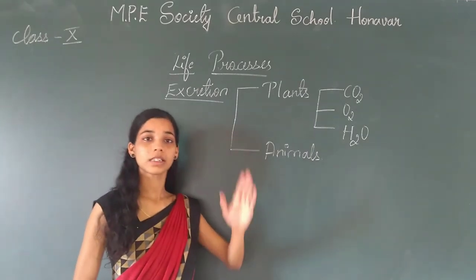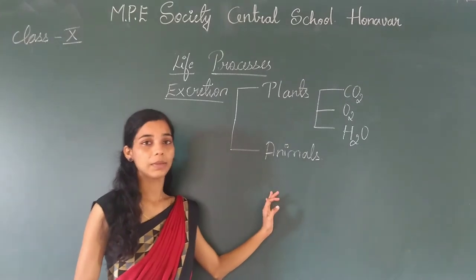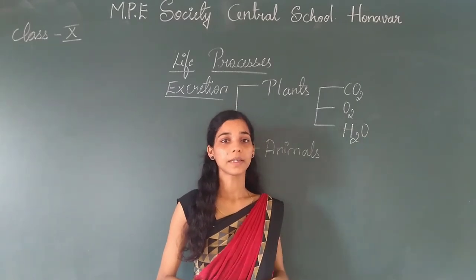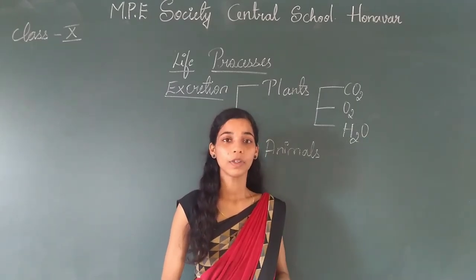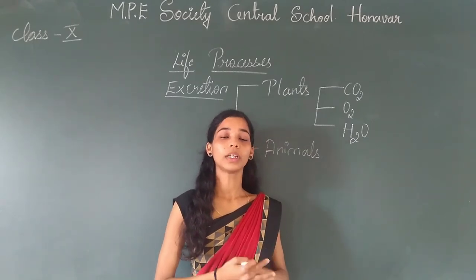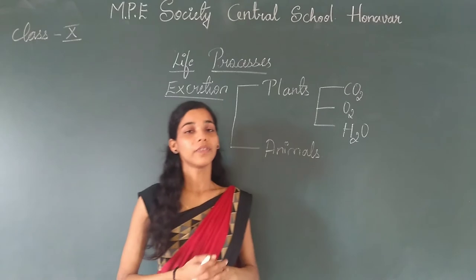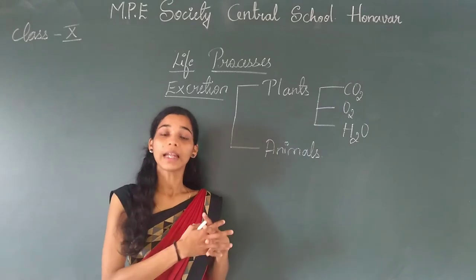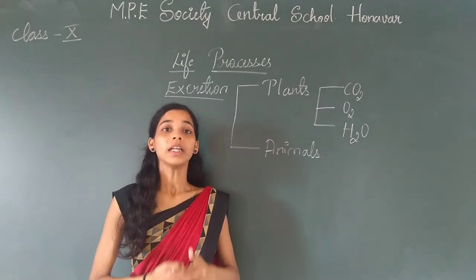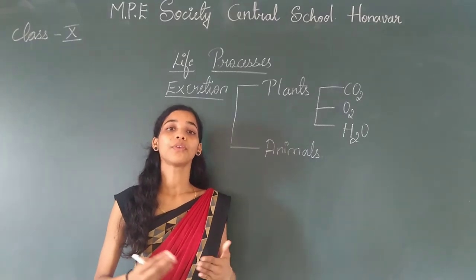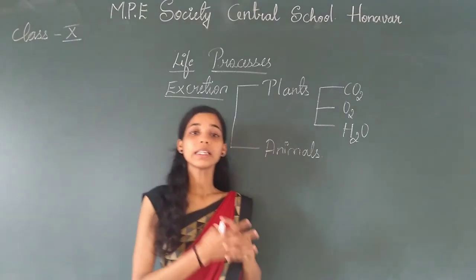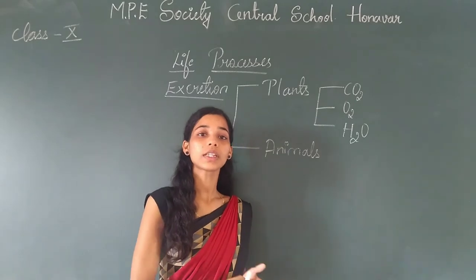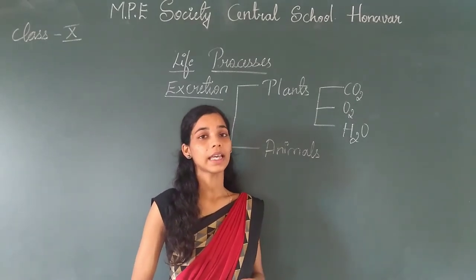What is excretion? How does excretion occur in plants and also in animals? We all know that all living organisms present on the earth are made up of cells, and these cells work continuously and perform various biochemical reactions, which are very much essential to the survival of life. As a result of these biochemical reactions, the body cells may generate some toxic waste, and this toxic waste must be removed out of the body. The process of removal of this toxic waste from the body, we call it as excretion.